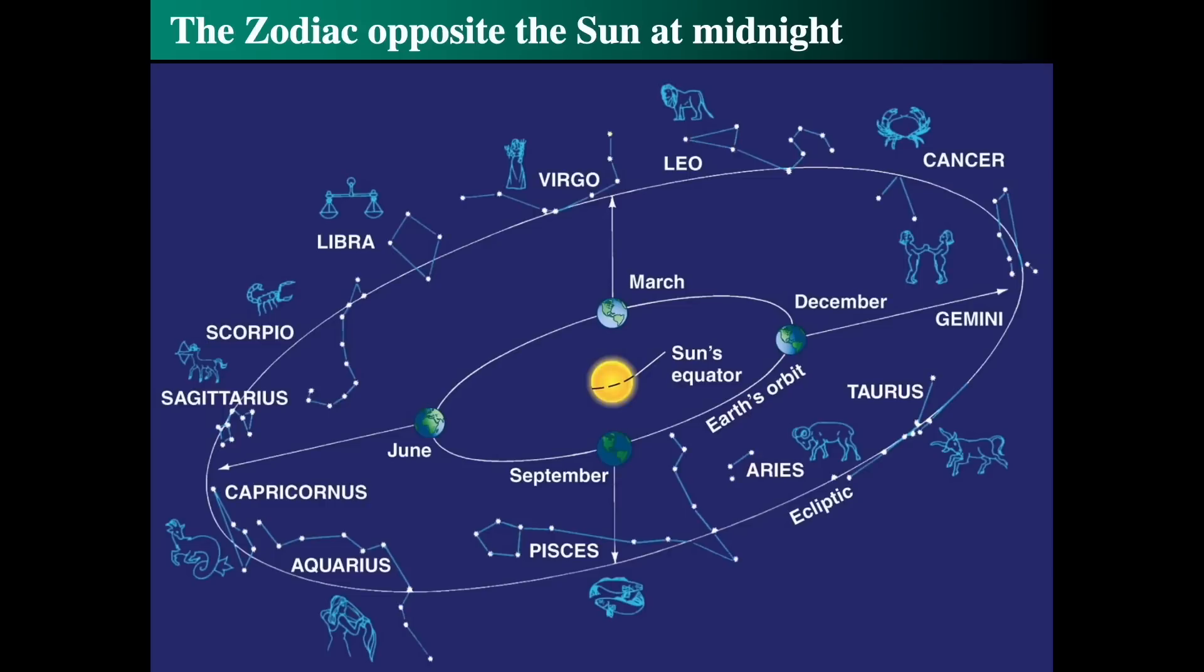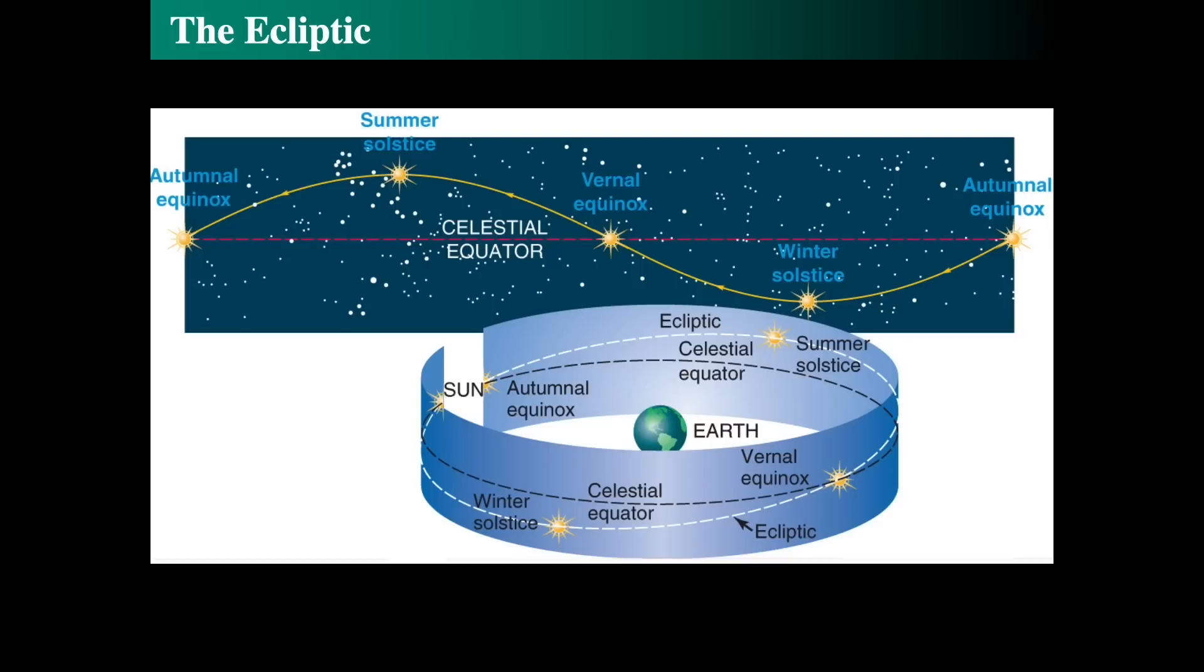This gives us rise to what we see as the summer constellations and the winter constellations. Gemini is a winter constellation, Sagittarius is a summer constellation, Pisces is a fall constellation, Virgo is a spring constellation. This shows the zodiacal positions of the constellations at midnight.